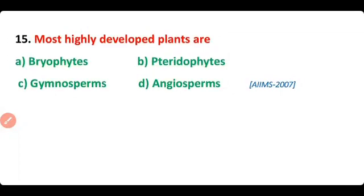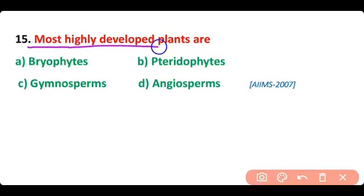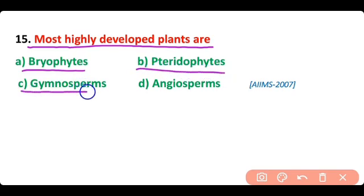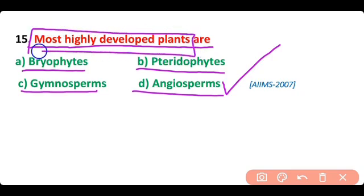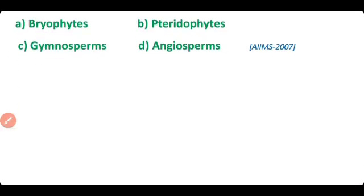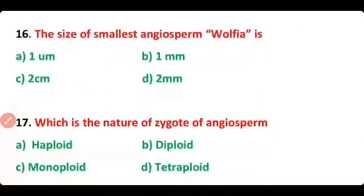Question 15. The most highly developed plants are: bryophytes, pteridophytes, gymnosperms, or angiosperms? The correct answer is option D. Angiosperms are considered the most highly developed plants on earth.